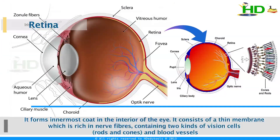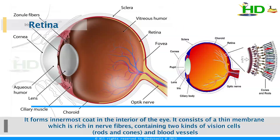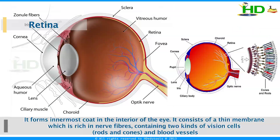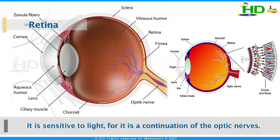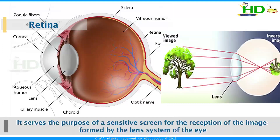The retina forms the innermost coat in the interior of the eye. It consists of a thin membrane which is rich in nerve fibers containing two kinds of vision cells — rods and cones — and also blood vessels. It is sensitive to light and serves the purpose of a sensitive screen for the reception of the image formed by the lens system of the eye.